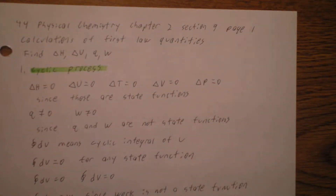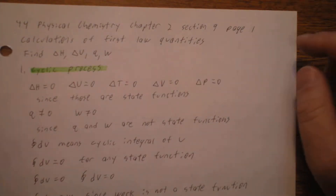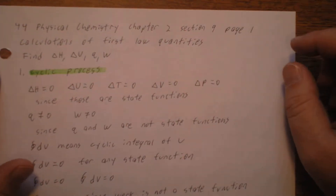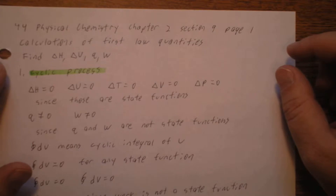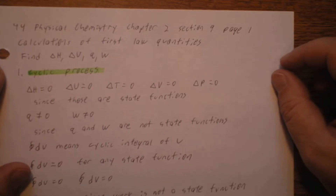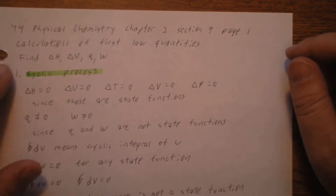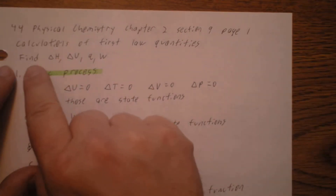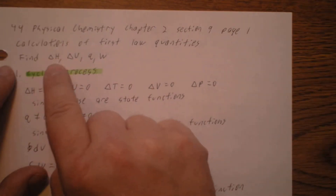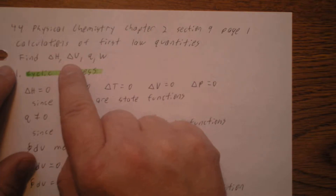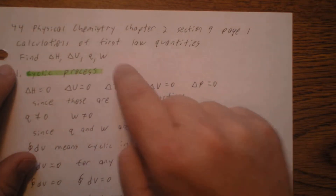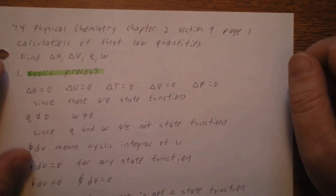Continuing on Physical Chemistry Chapter 2, we're beginning Section 9 now. We're going to do more calculations of first law quantities — finding the change in enthalpy, the change in internal energy, Q, or W.